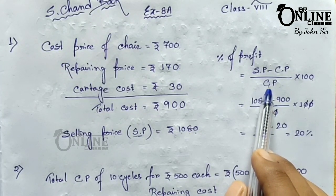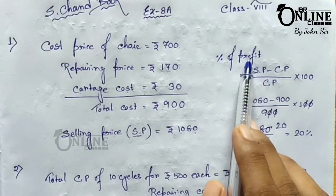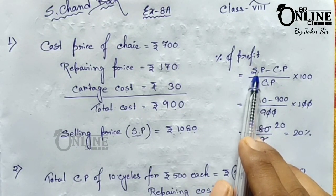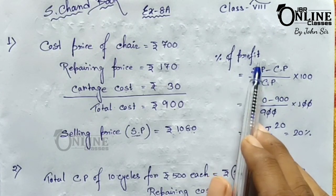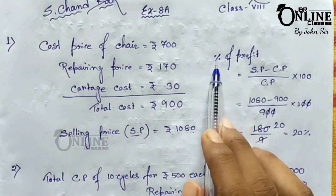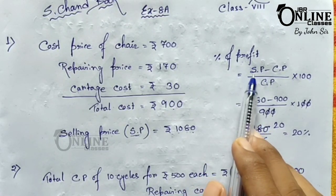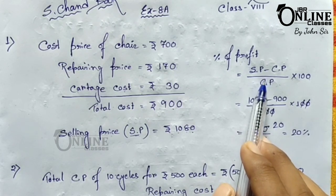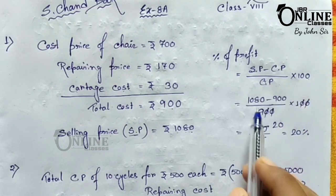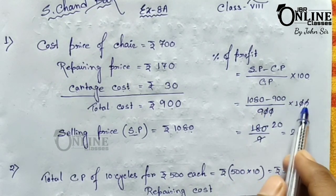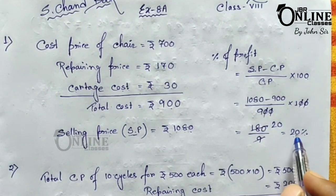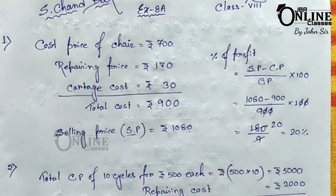We cannot find profit or loss based on SP — every problem requires finding the CP first. Putting in the values: (1080 minus 900) divided by 900, into 100, gives us 20%. So the profit percentage for problem number one is 20%.